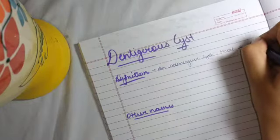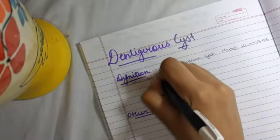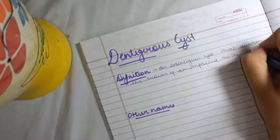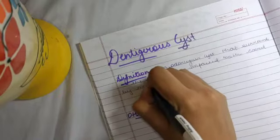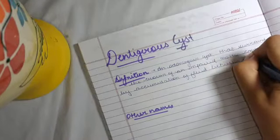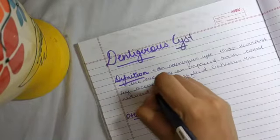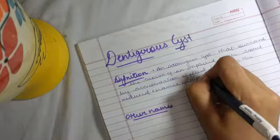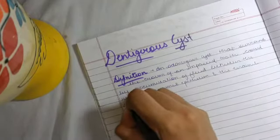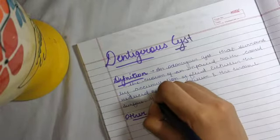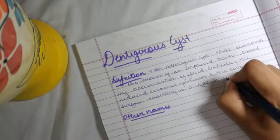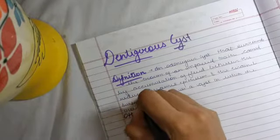It surrounds the crown of an impacted tooth, caused by accumulation of fluid between the reduced enamel epithelium of the dental follicle and the enamel surface, resulting in a cyst in which the crown is located within the lumen.